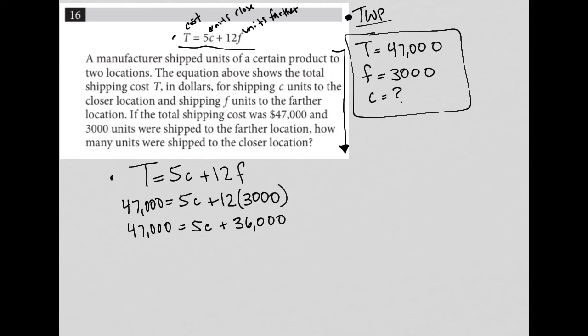Don't forget, we do not have use of a calculator for this section. This is the non-calculator section. So to simplify my equation here, I can combine like terms by subtracting 36,000 from both sides of the equation. 47,000 minus 36,000 is 11,000. So I have 11,000 equals 5C. I divide both sides by 5 here. Again, I don't have a calculator.